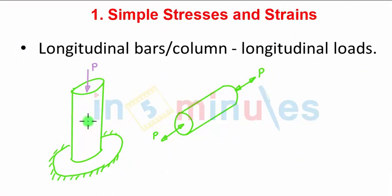Now again consider the two bodies. If the load acts on this body along the longitudinal direction, then this body can be called as simple longitudinal bars or columns.